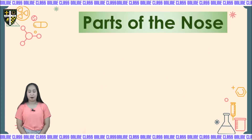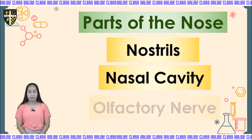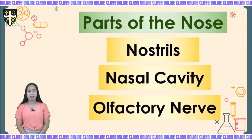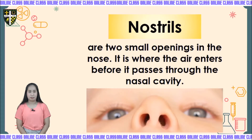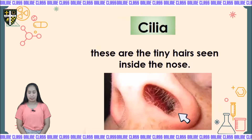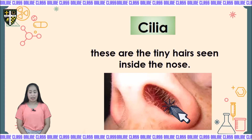We have three parts of the nose: the nostrils, the nasal cavity, and the olfactory nerve. Let us first have the nostrils. Nostrils are the two small openings of the nose. It is where the air enters before it passes through the nasal cavity. In the nostrils, we have cilia — these are the tiny hairs seen inside the nose. Cilia serve as a filter that blocks dust, particles, and tiny insects trying to enter our nose.